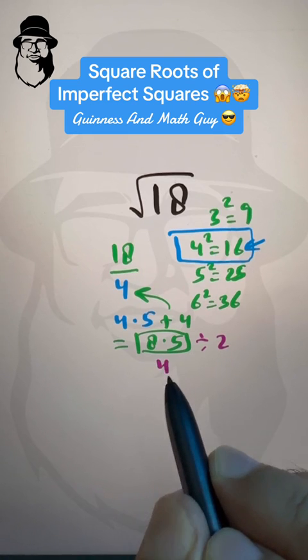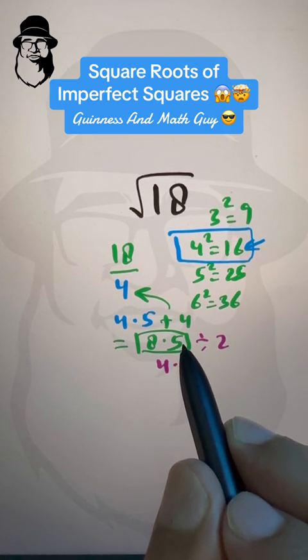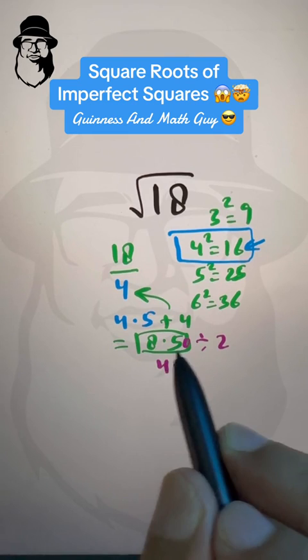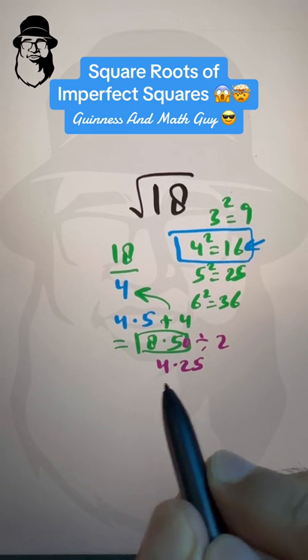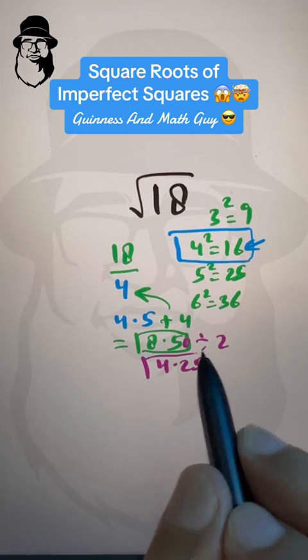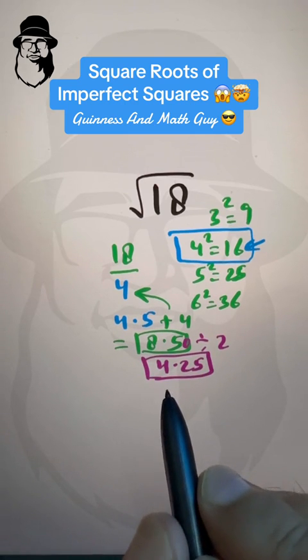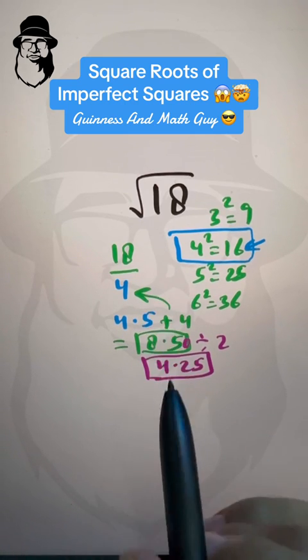So, divide by 2, 2 times 4 is 8, and this is 0.50 or 50, we can write 25. So, remember, this is approximate answer of square root of 18.